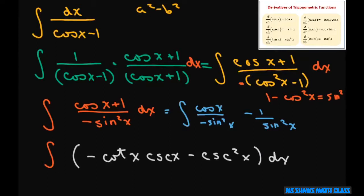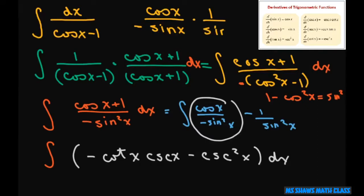Remember on your identities, you can write this as cosine x divided by sine x – we have this negative here – times 1 divided by sine x. That's why you're getting both of these.